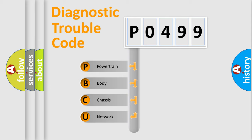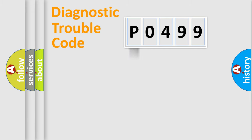We divide the electric system of automobiles into four basic units: Powertrain, Body, Chassis, and Network. This distribution is defined in the first character code.